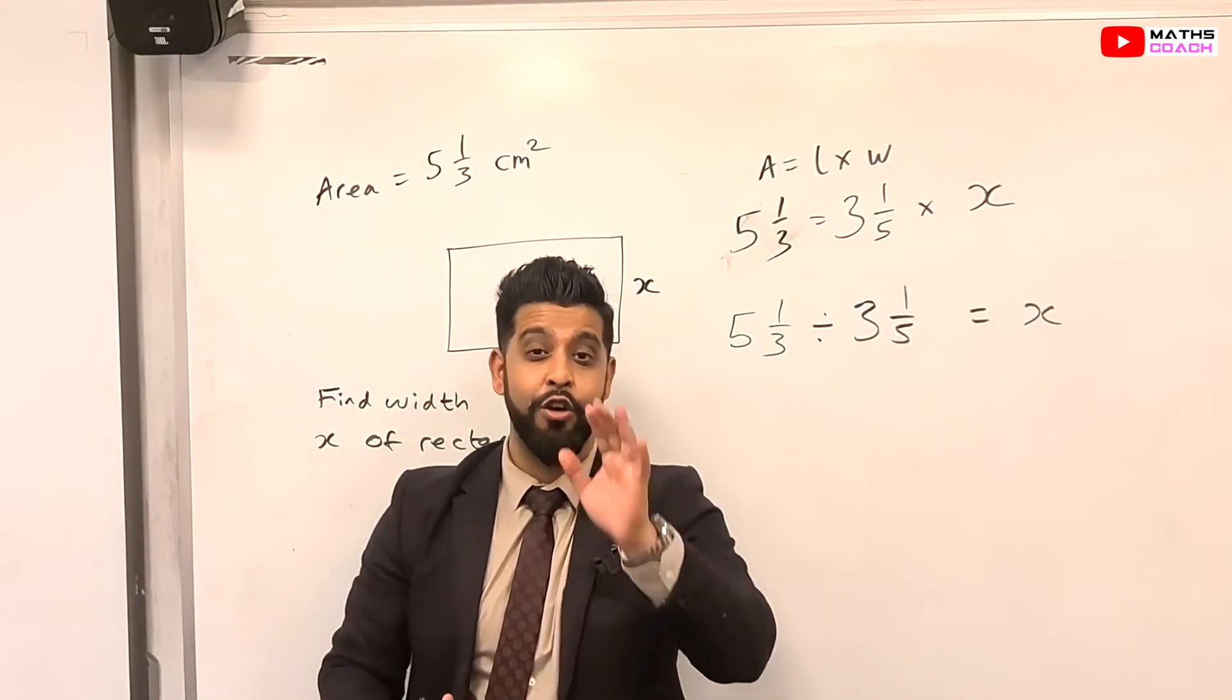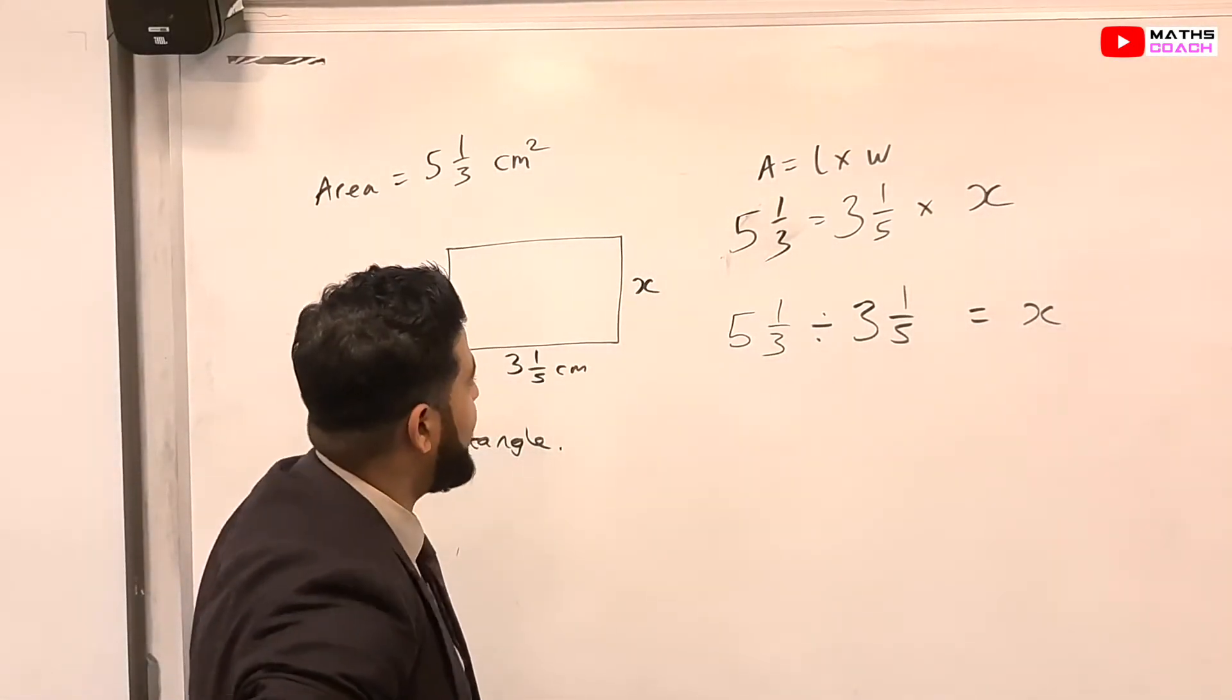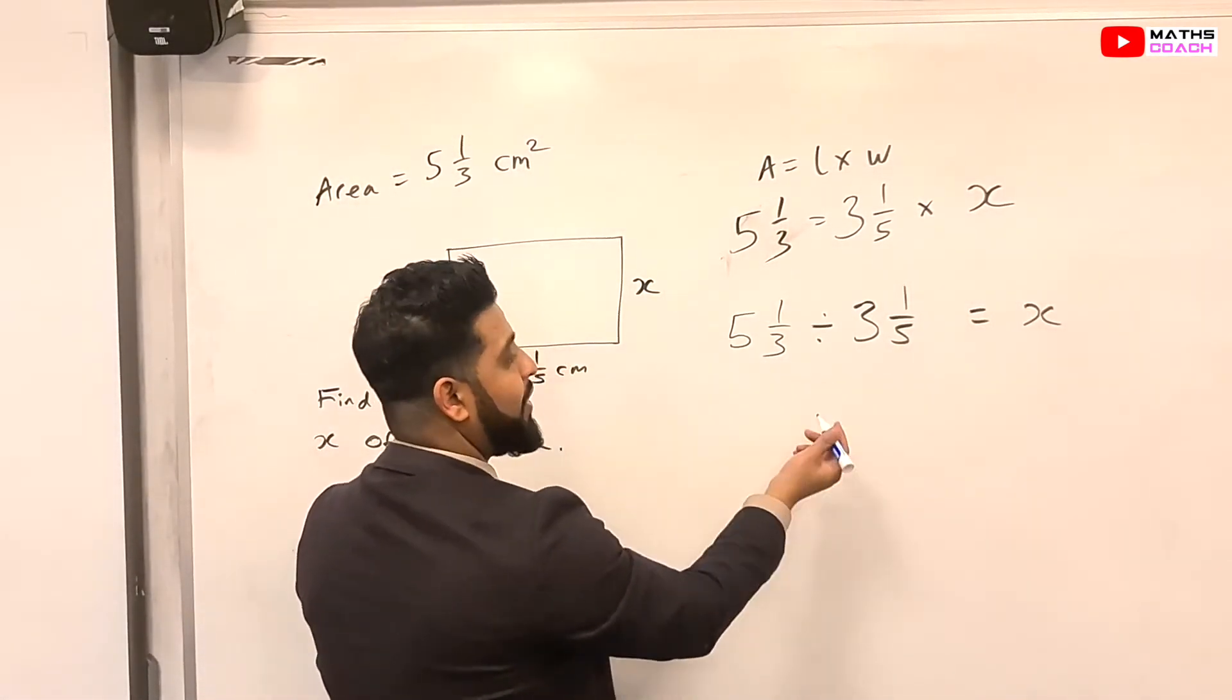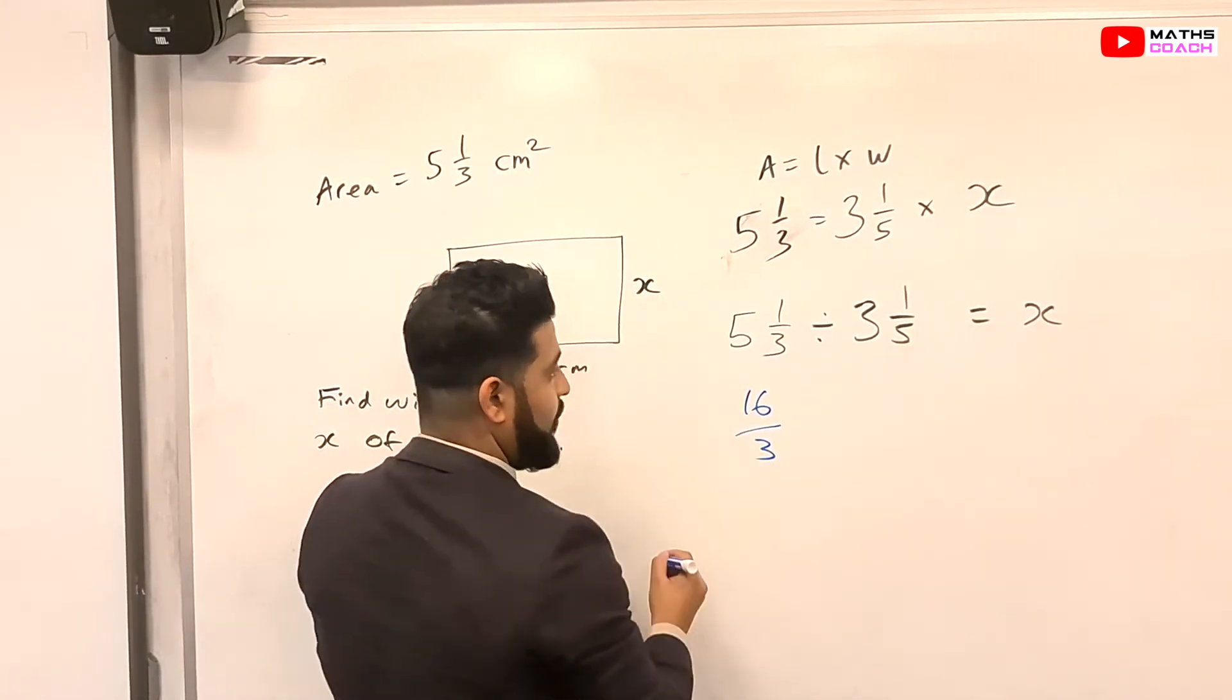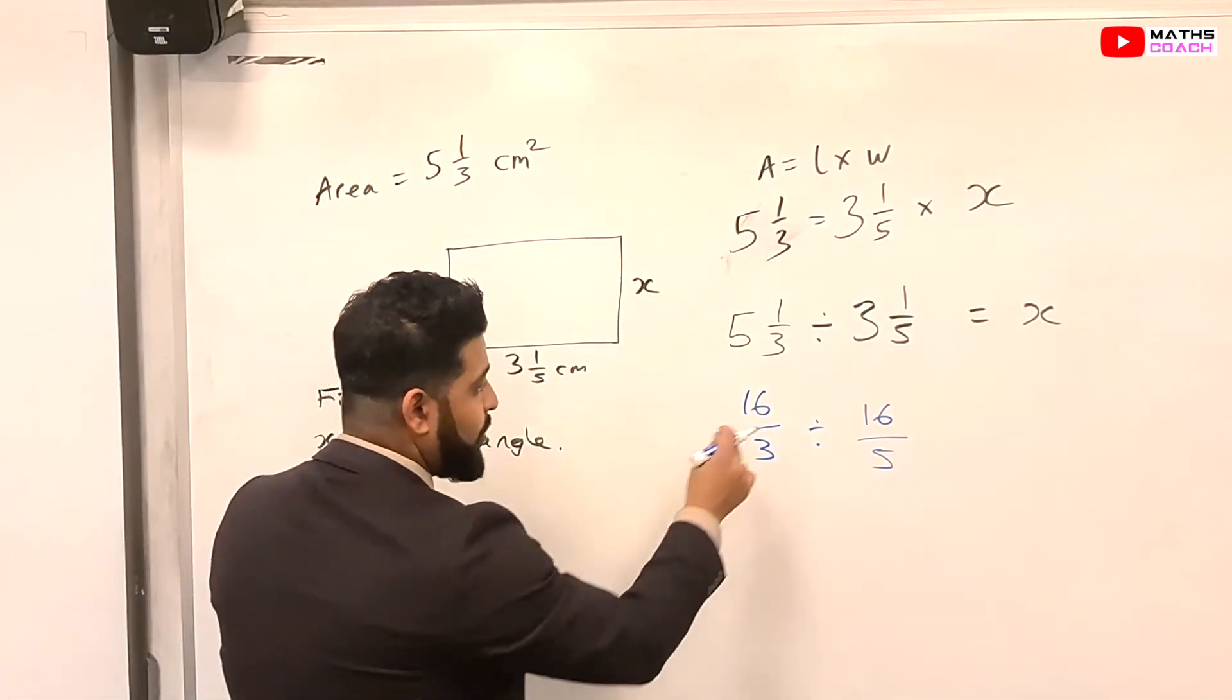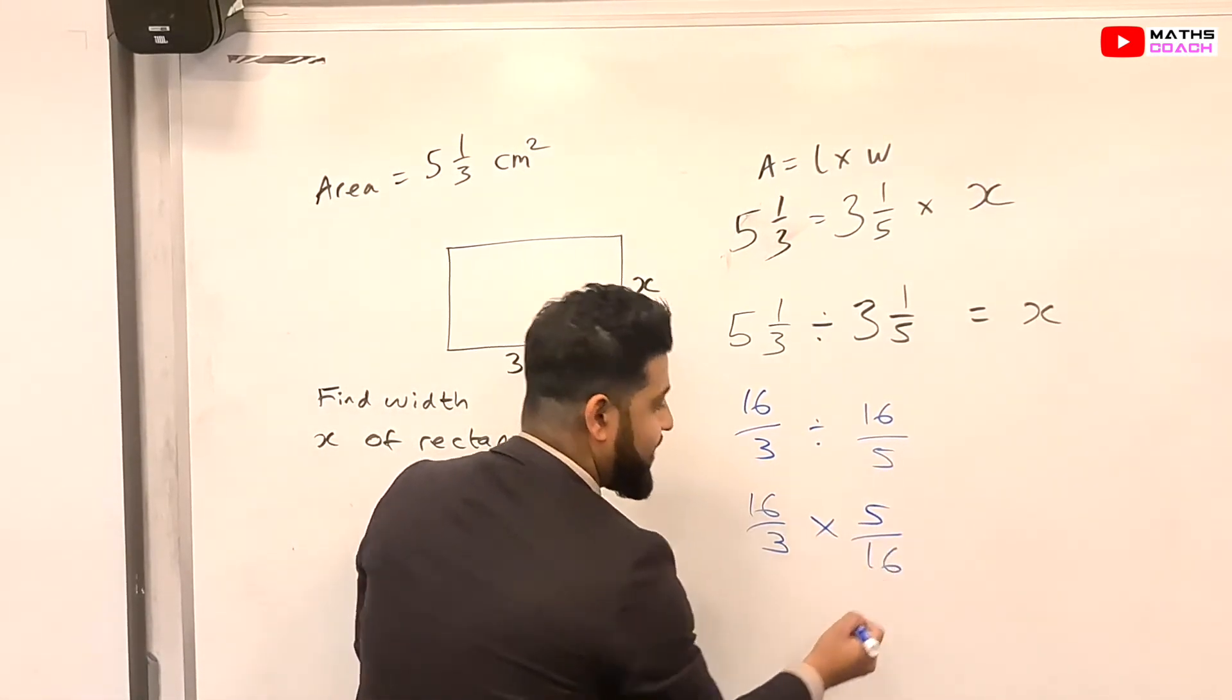So let's do this. Maybe you want to pause the video, try it yourself, and test yourself to see you can do it. And when you're ready, you can press play again. Right. So hopefully you've had a chance to look at this. So we have 5 1/3. Let's convert that into an improper fraction, top-heavy fraction. So 5 times 3 equals 15. Plus 1 is 16 over 3. Division. So 3 times 5 here again is 15. Plus 1 equals 16. 16 over 5. So how do we deal with this? We're going to keep the first fraction. So 16/3. We're going to change the division into a times sign. And we're going to flip the second fraction. So we have 5/16 instead.